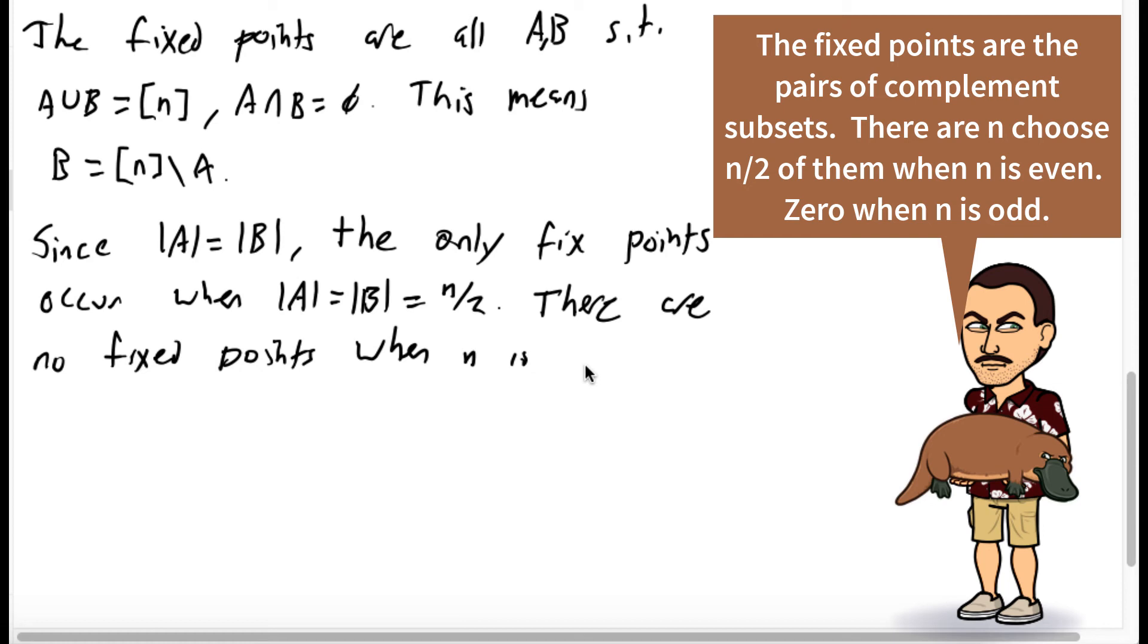Well, this means that there's no fixed points when n is odd. Because n over 2 would need to be an integer. And the only fixed points when n is even are exactly when you choose A and then B is exactly its complement. So there's n choose n over 2 fixed points when n is even.